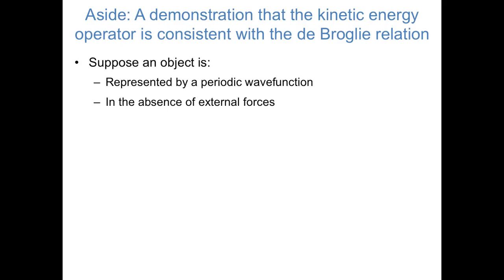I'll admit that this demonstration is a bit sketchy, and it makes a lot of assumptions and skips a lot of steps, but try to bear with me. Suppose we're looking at an object that's represented by a periodic wave function, and by that I mean a sine or a cosine function. So we're going to assume that psi of x is equal to cosine of some constant k times x. We're also assuming that we're in the absence of external forces. In other words, the potential energy operator, v of x, equals zero.